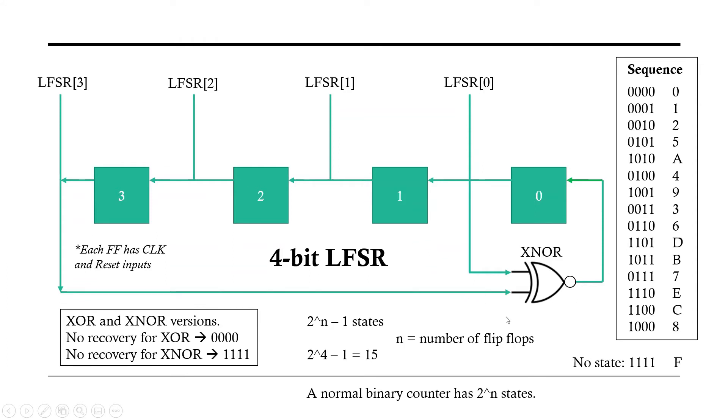Now kind of the opposite for the XNOR. If you started off with all ones, that's a no recovery state. It will never come out of 1111 with an XNOR, or 0000 with an XOR. And so the number of states you get with this is 2^n minus 1, where n is the number of flip-flops. So in this case, we're going to have 15 different states.